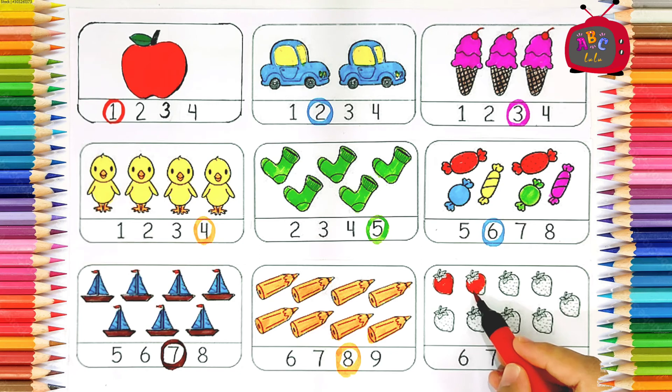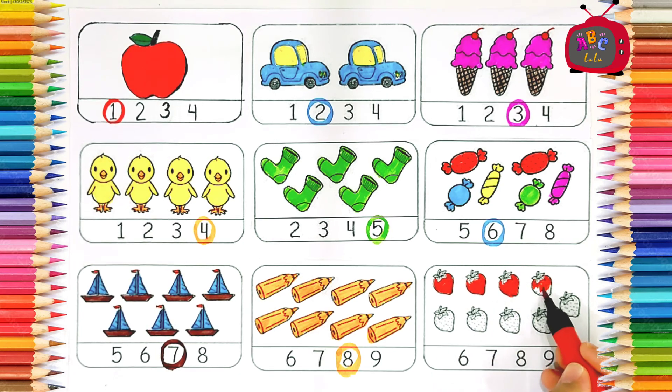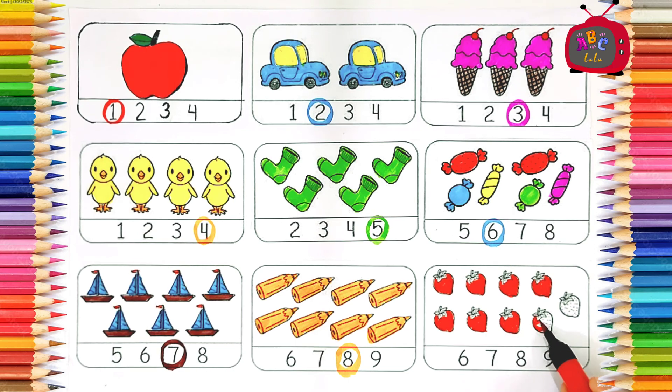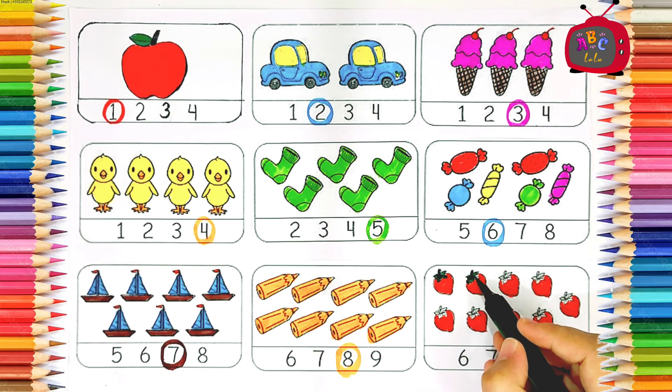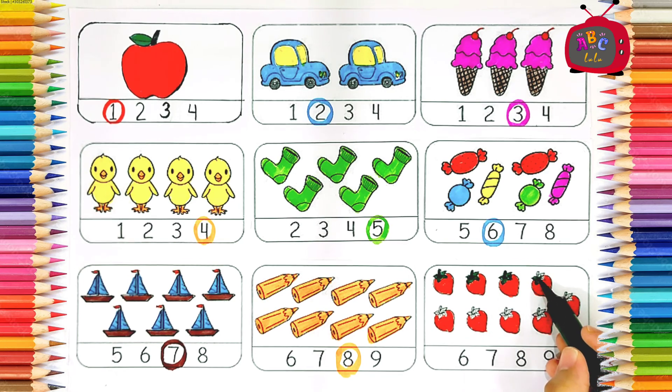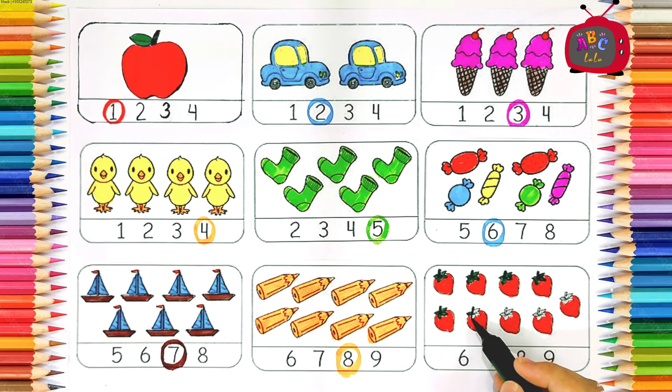One, two, three, four, five, six, seven, eight, nine. One, two, three, four, five, six. Eight. Seven. Eight. Nine. Nine strawberry. Where is nine? Nine. N-I-N-E. Nine.